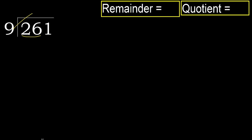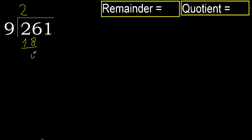9 multiplied by 3 is 27. 27 is greater. 9 multiplied by 2 is 18, which is not greater. Subtract — remainder is 8.